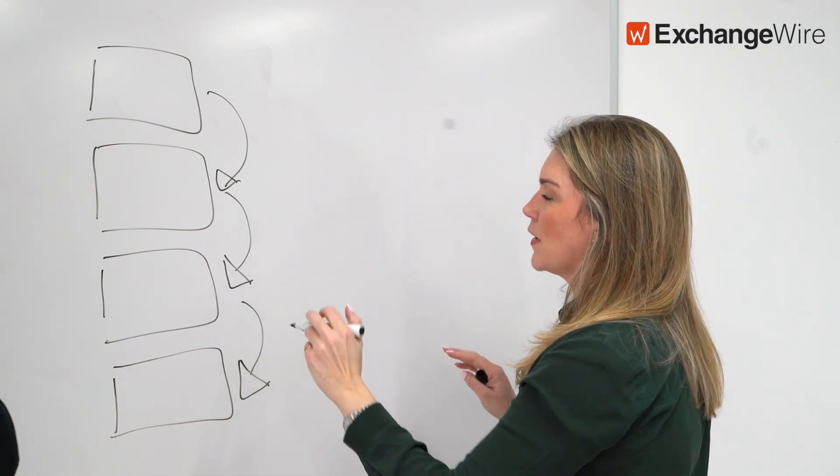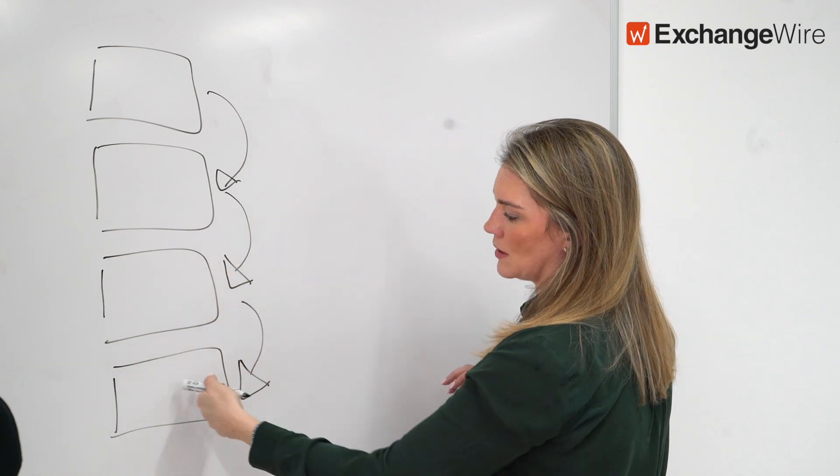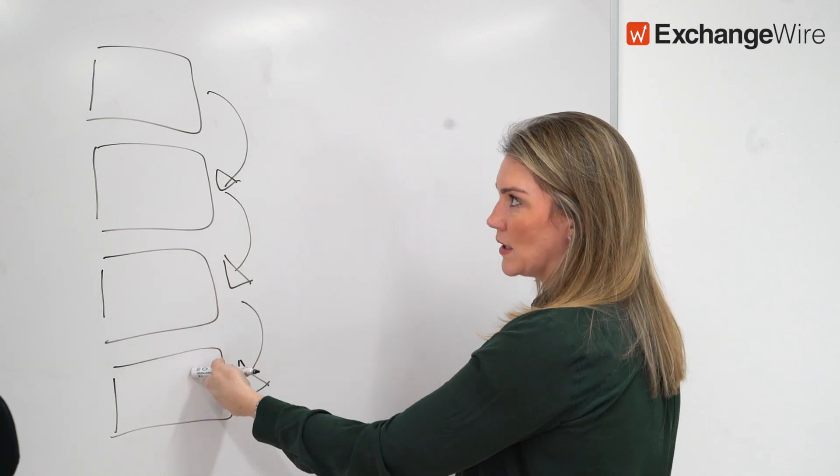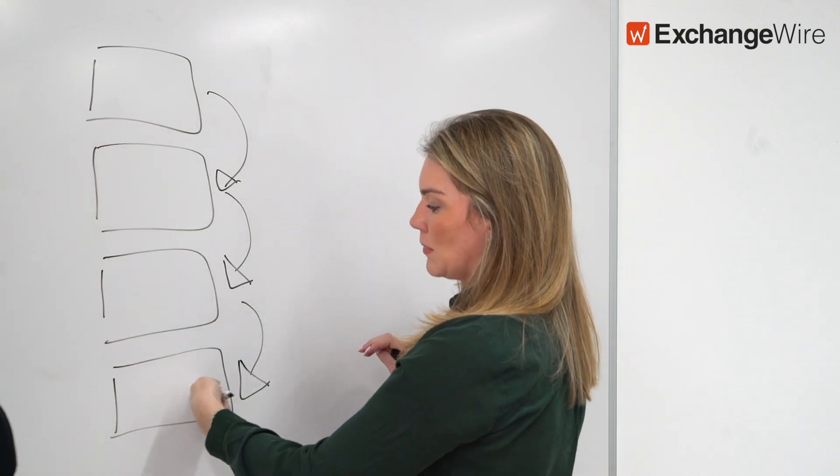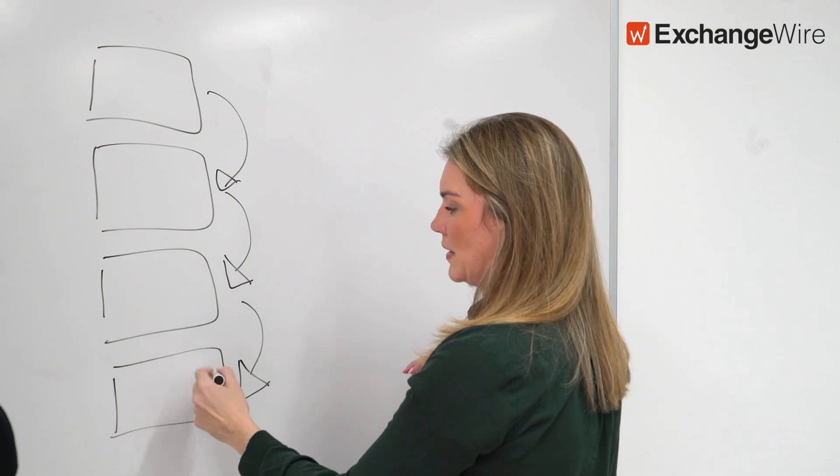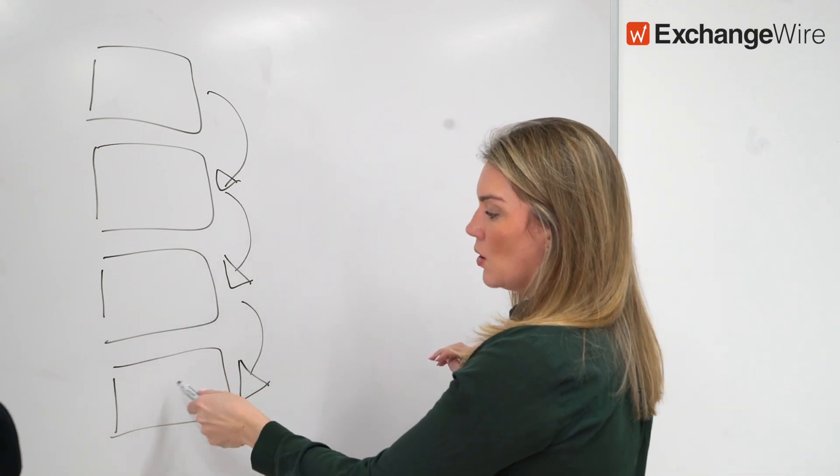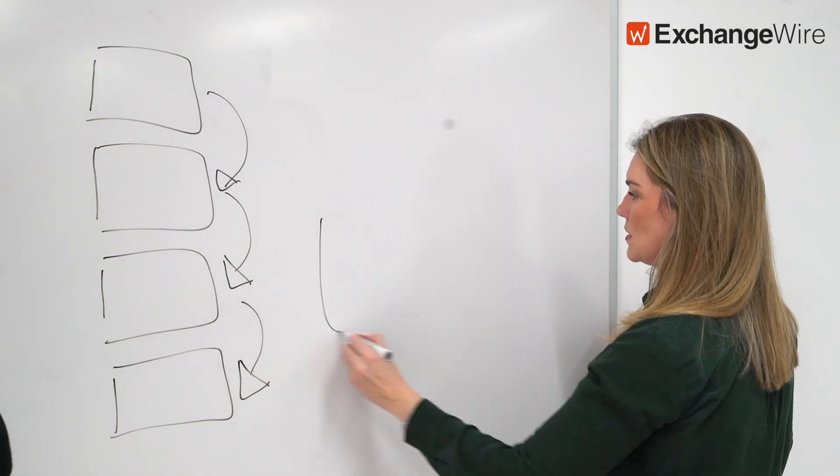Then you've got this daisy chain of priority offering people access to your inventory. That's fine, but you're going to lose time and money in each of these jumps. Down here you might have the person willing to bid the most on your inventory, but they either might not get the option or they could have timed out.